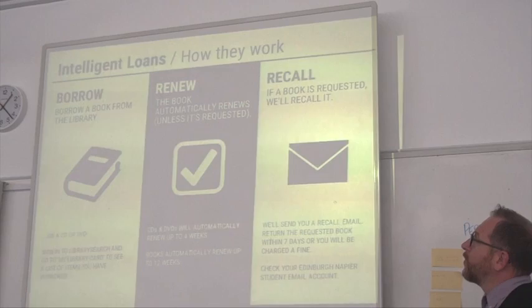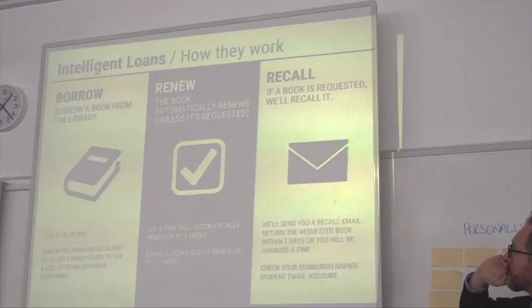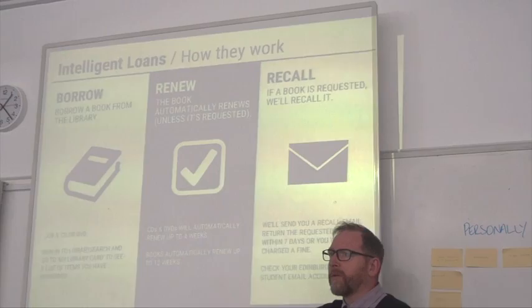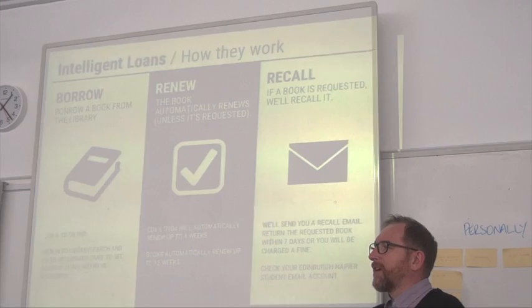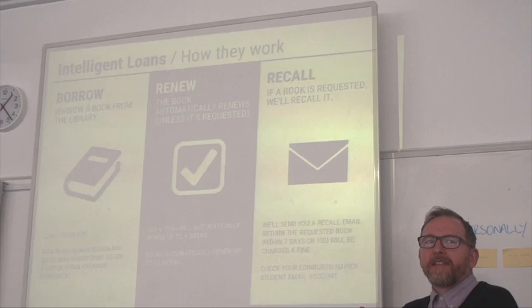Borrowing books — your matriculation card is your library card. You can borrow up to 15 items at a time. When you borrow something, we automatically renew it. It's actually 16 weeks now. After that you can still keep the book — just bring it back and we'll reissue it. We'd just like to see that it's still there after 16 weeks.